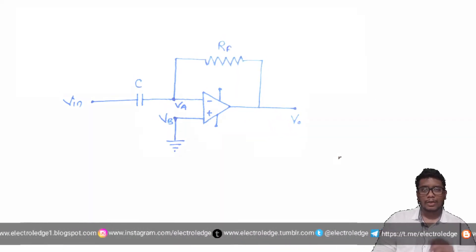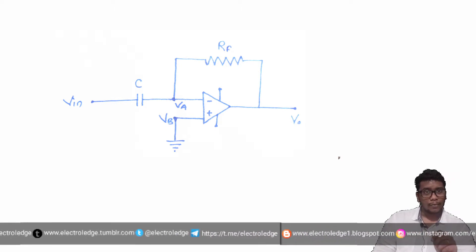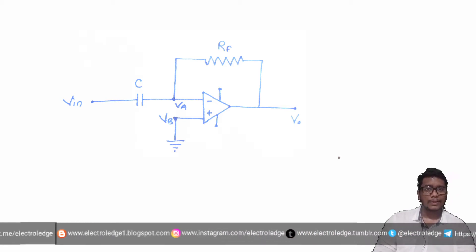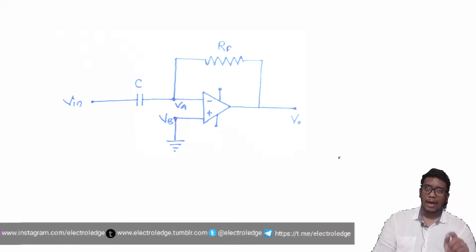you can see the non-inverting terminal is connected to the ground. And the inverting terminal is connected to the VIN, voltage VIN, through the capacitor C. And the feedback is taken through the resistor RF.